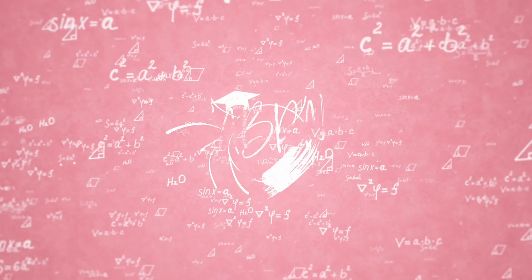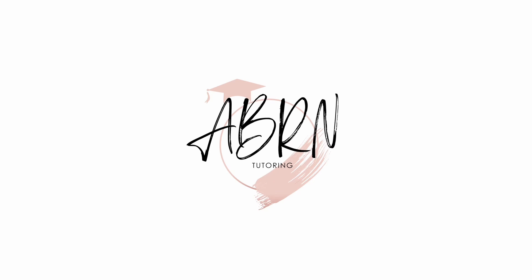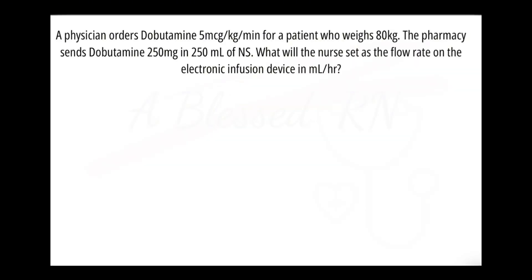Hey, it's a blessed RN and we're going to be solving a milliliter per hour weight-based problem using dimensional analysis with our puzzle pieces. A physician orders dobutamine 5 micrograms per kilogram per minute for a patient weighing 80 kg. The pharmacy sends 250 mg in 250 mL of normal saline. We need to set the IV pump in milliliters per hour — that's our goal.